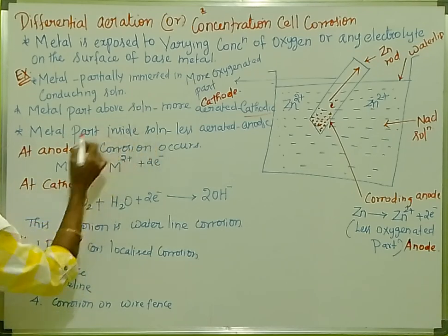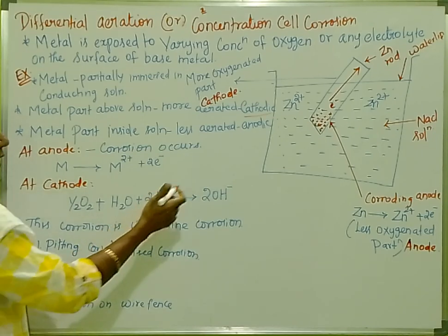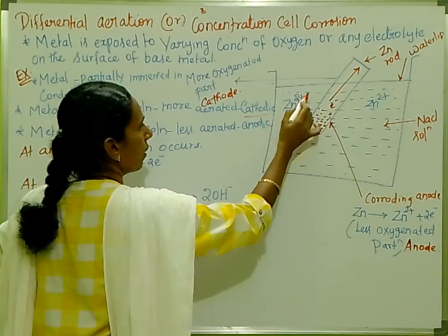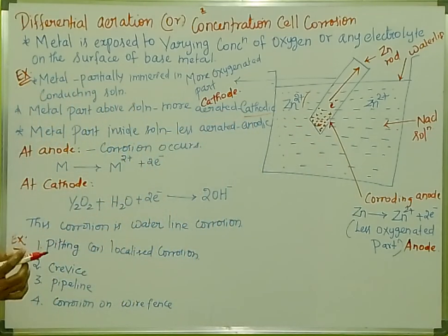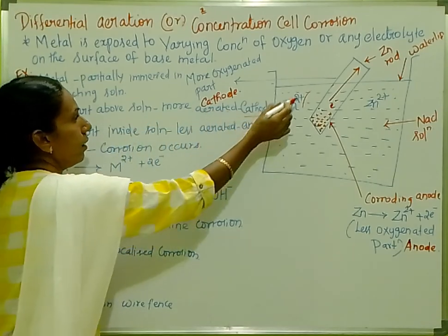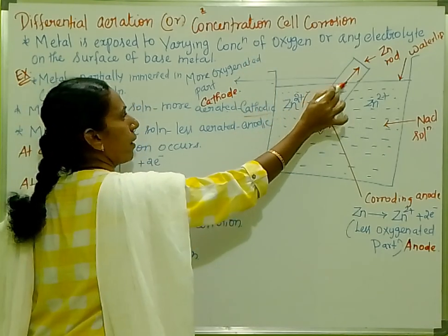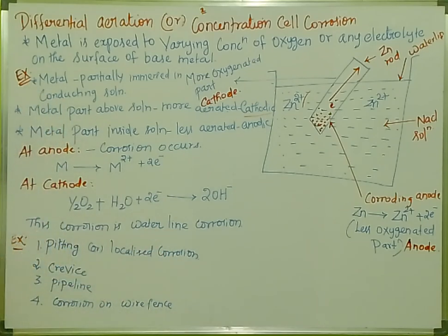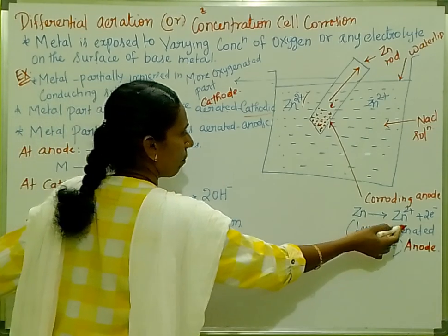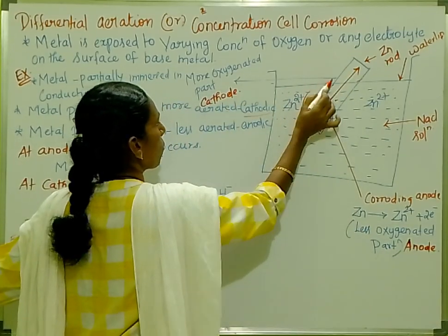The metal part inside the solution is less aerated. The area inside the solution is less aerated. More aerated part is cathodic — that is the healthy part. The part inside the solution is less aerated, so it acts as the anode. Anodic means oxidation; cathodic part means reduction. Less aerated part is anode; more aerated part is cathode.